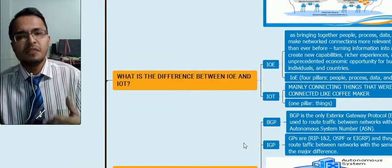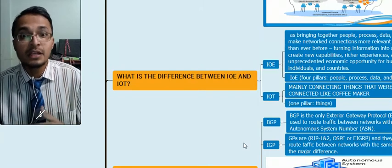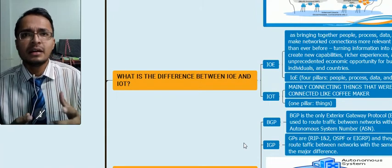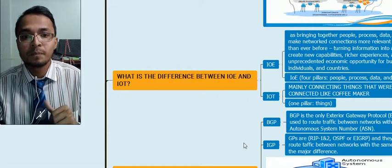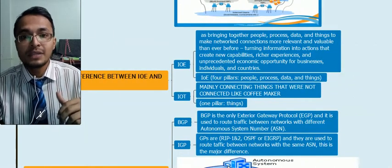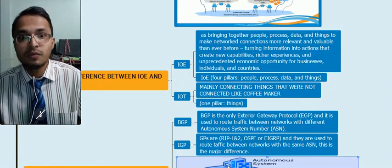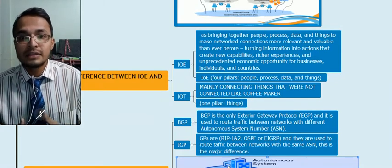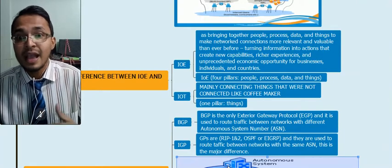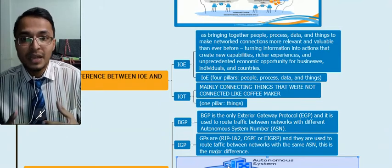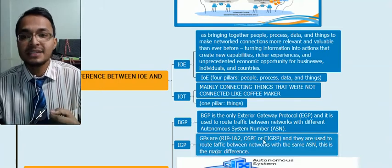Our next question: what is the difference between IoT and IoE — Internet of Things and Internet of Everything? Many people use these terms simultaneously, but there is a major difference. IoE is Internet of Everything, a term coined by Cisco, and it is a master class of IoT. IoE has four pillars: people, process, data, and things. IoT has only one pillar — things.